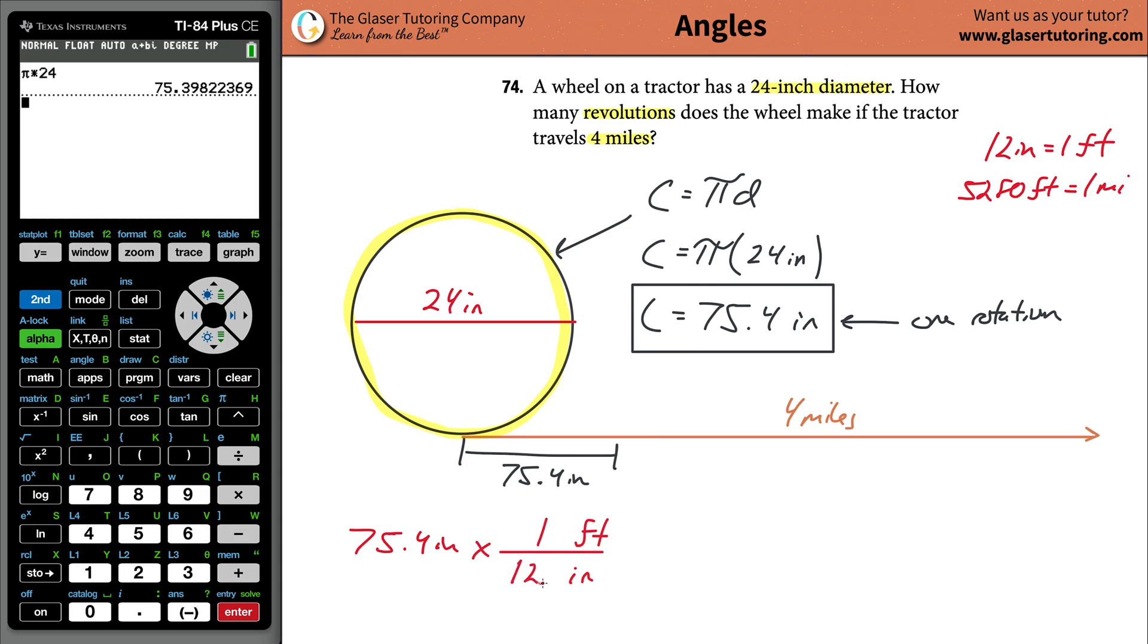I'm going to plug in my values here because I know that for every one foot there's going to be 12 inches. Now these units of inches will cancel, and this will tell me the number of feet 75.4 inches would be. But I don't want to know feet, I want to know miles. So feet will go to the bottom. Do I know a relation between feet and miles? Yes we do—there's 5,280 feet in one mile.